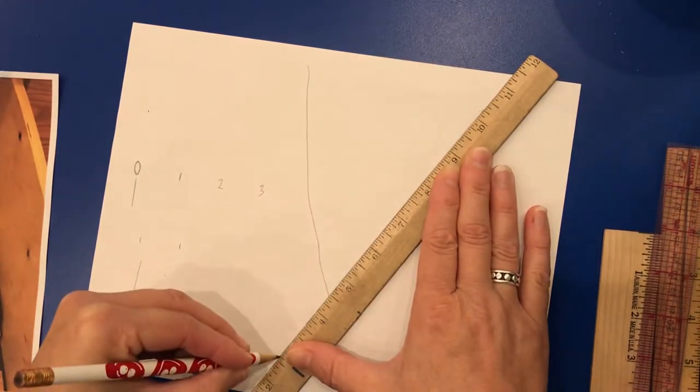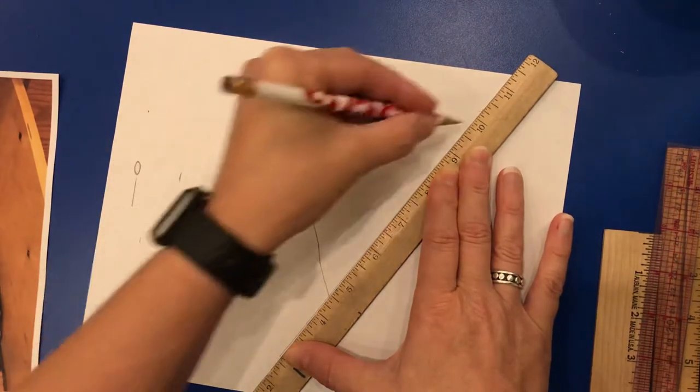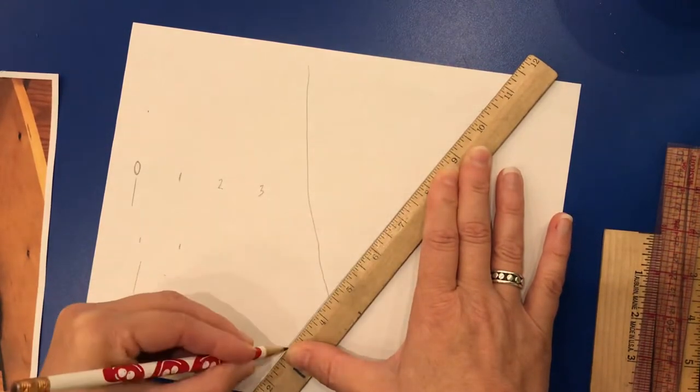And notice how when I'm holding my ruler, and I'm pressing down with my fingers spread out wide in the middle, notice my ruler does not shift.